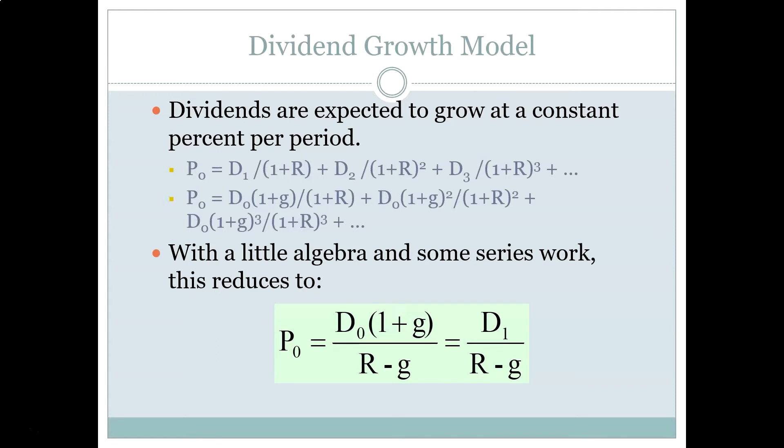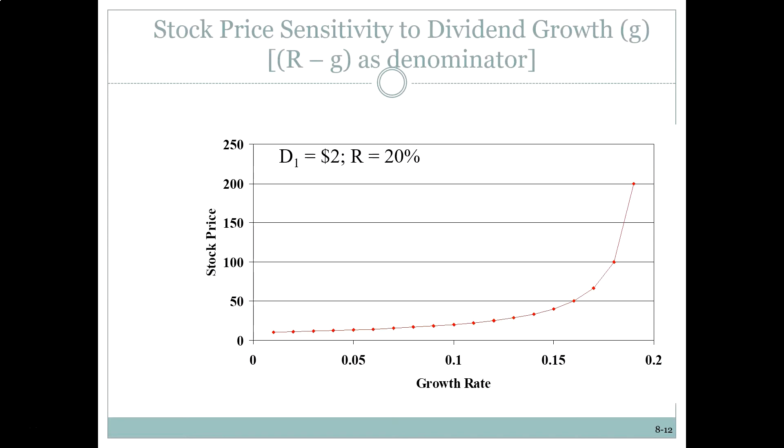It's on the formula sheet for the exams, and it's sprinkled throughout all of the examples that we're going to work, and we call it the dividend growth model. But in reality, the dividend growth model is just the growing perpetuity model that we learned in chapter six. It just has some new flavor on it, some new context.